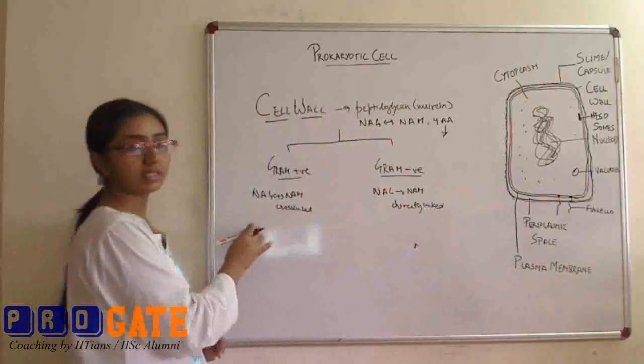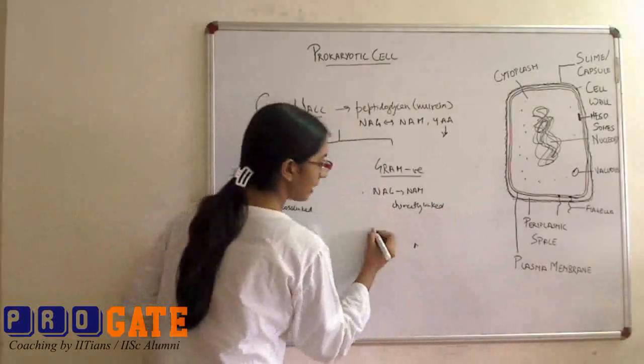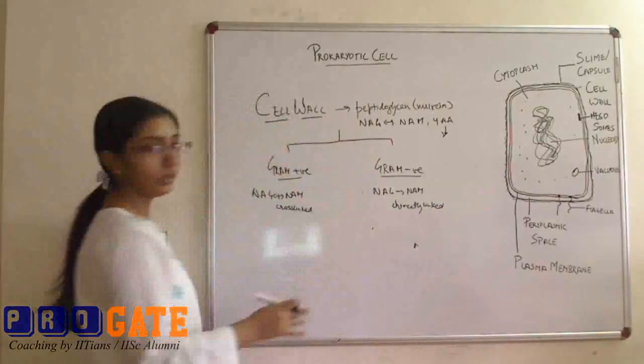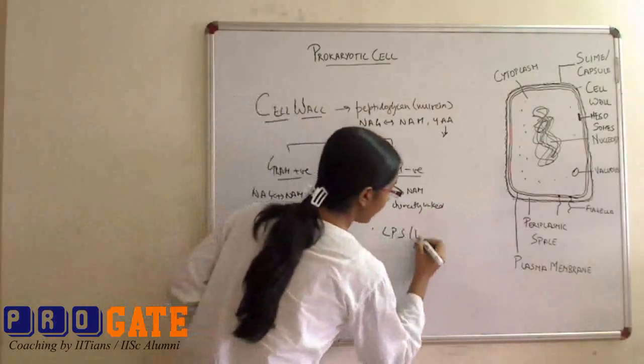Overall, apart from this, the gram-negative bacteria cell wall is actually a very complex one. Apart from peptidoglycan, we have LPS, that is lipopolysaccharides.